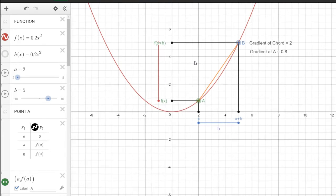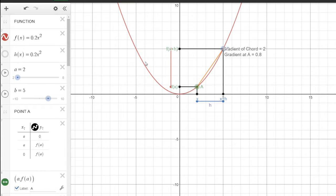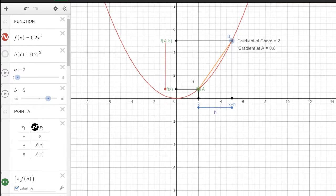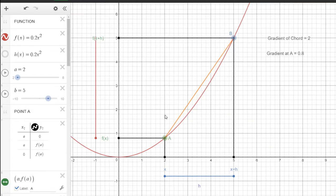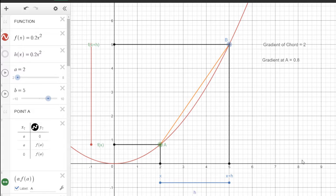So if I zoom out, you can see that's the function f of x equals 0.2x squared in red. And I've picked two points on that function, point A and point B. And I've dropped down the perpendicular of point A to the x-axis. And that's given that value x. And the y-value of that point A is f of x.